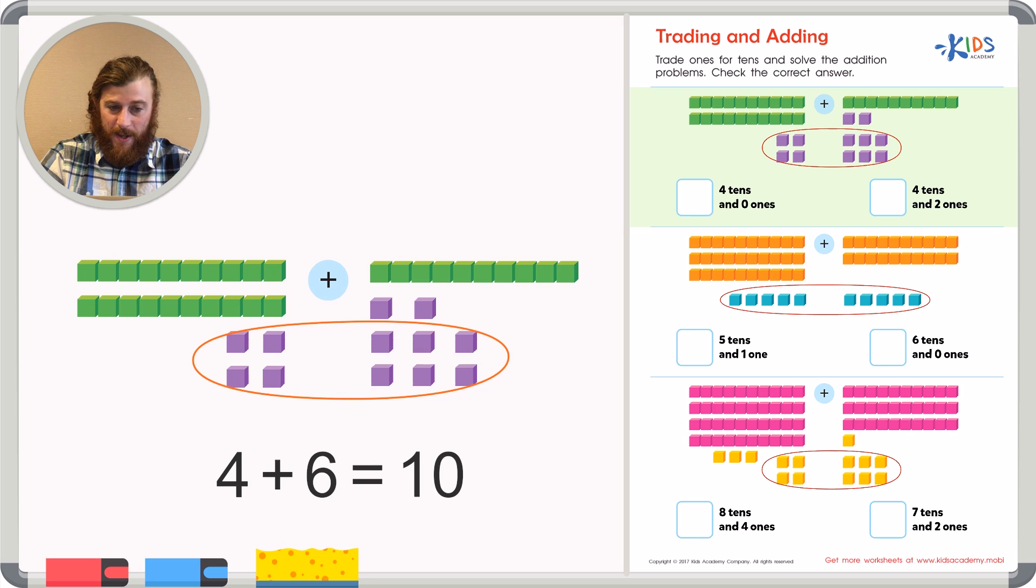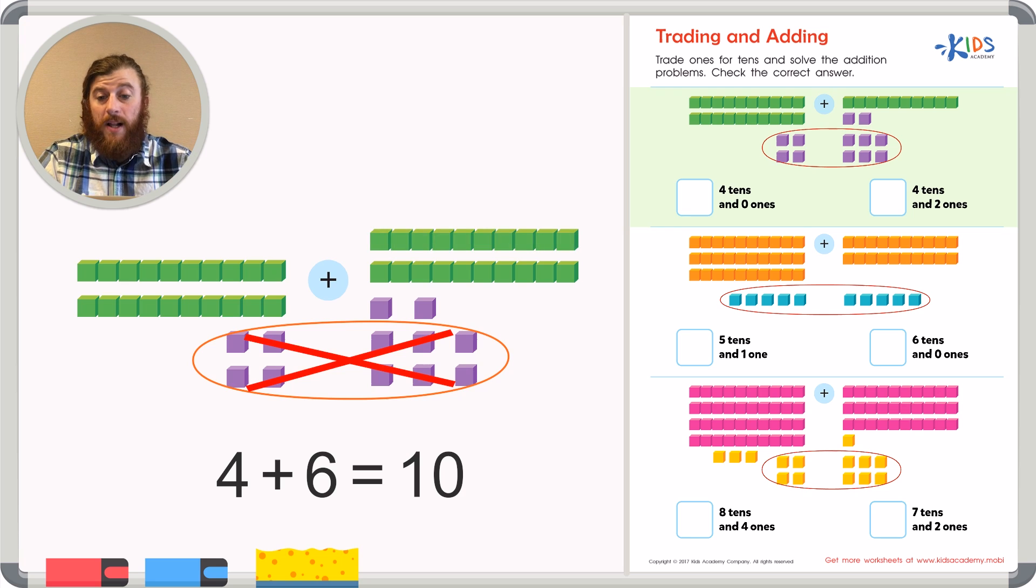So I'm going to cross out or trade these ten cubes for one long. Put my one long right here. Then I just have two ones.